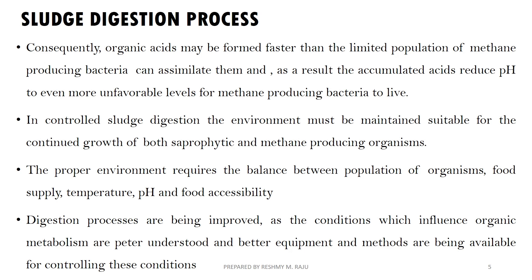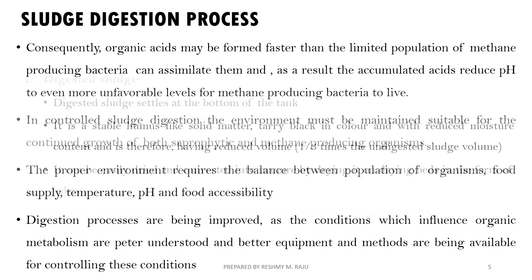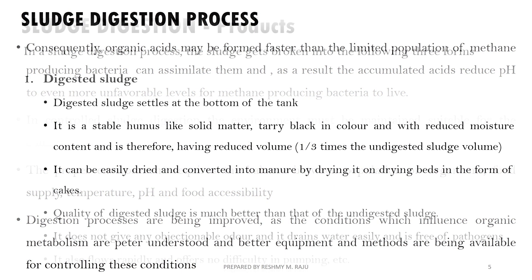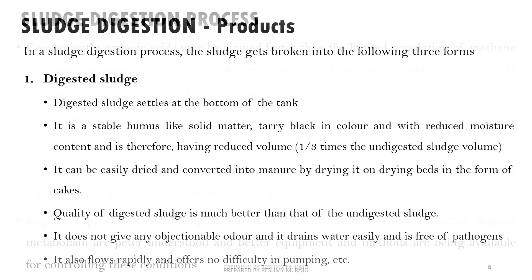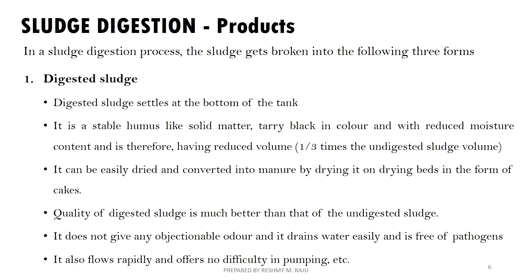A proper environment requires the balance between the population of organisms, food supply, temperature, pH, and food accessibility. Digestion processes are being improved as the conditions which influence organic metabolism are better understood and better equipment and methods are being made available for controlling these conditions.